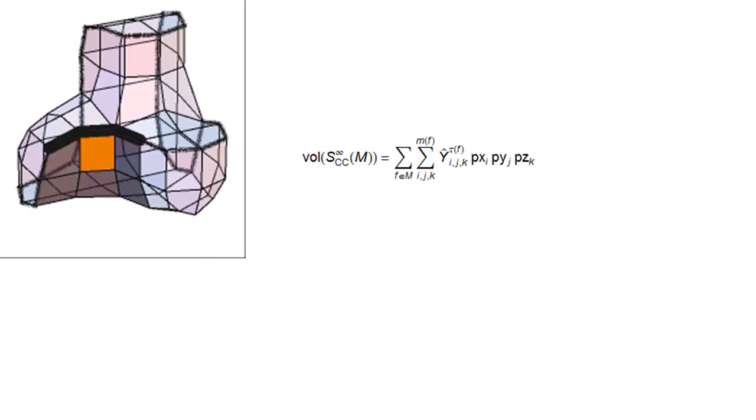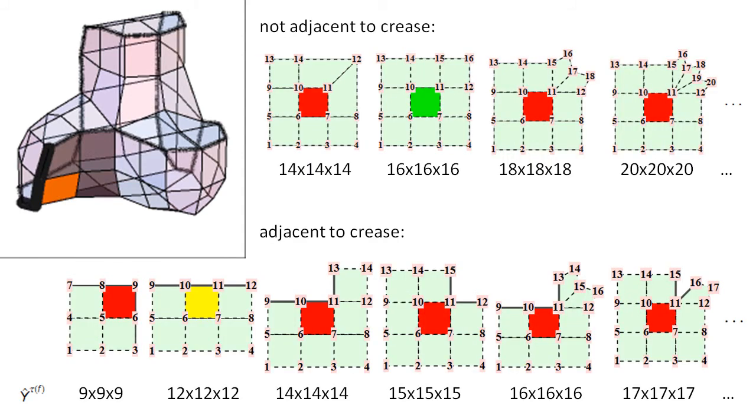Now let's move on to Catmull-Clark with sharp creases. Fortunately, the volume formula is still of the same prototype. The sum is over all quads of the mesh. The trilinear forms derived earlier for ordinary Catmull-Clark surfaces still apply to the quads that are not adjacent to the crease.